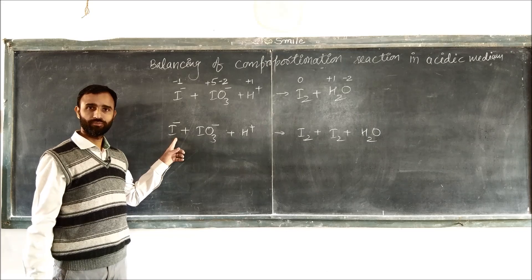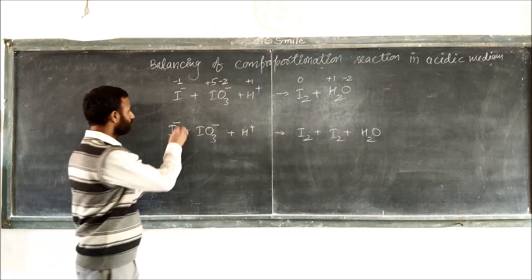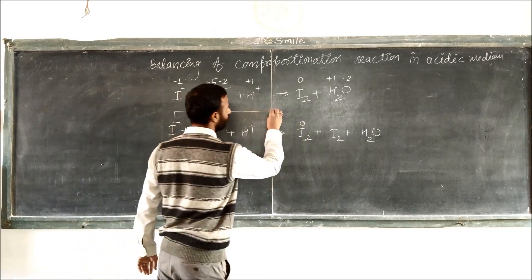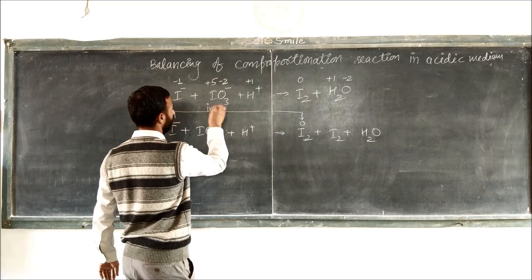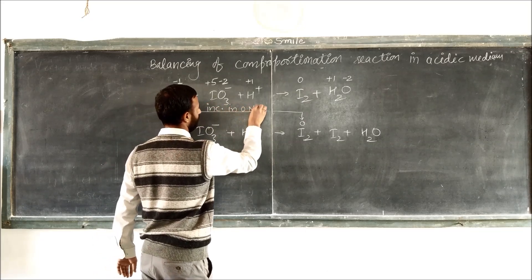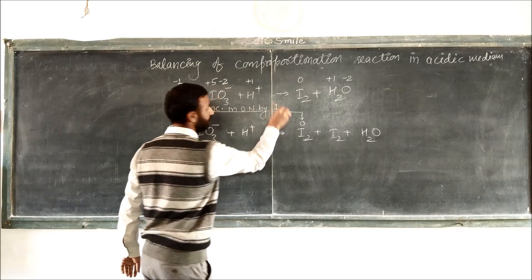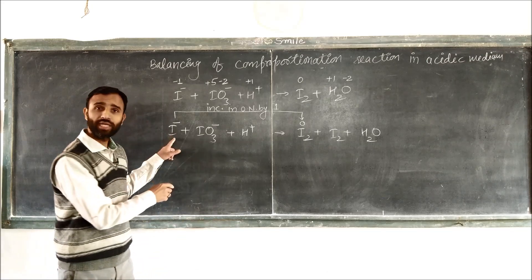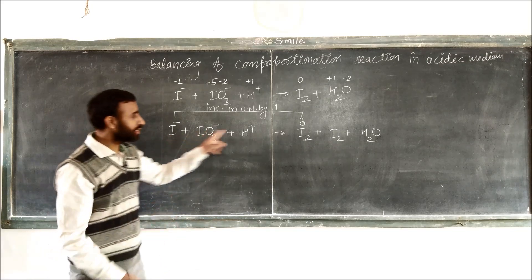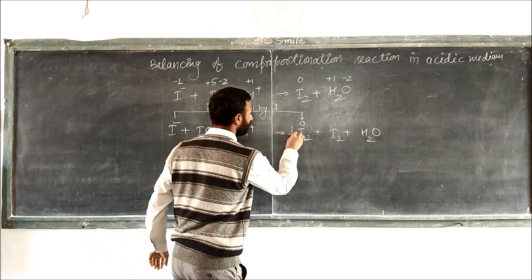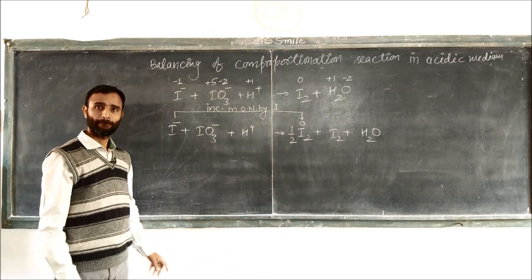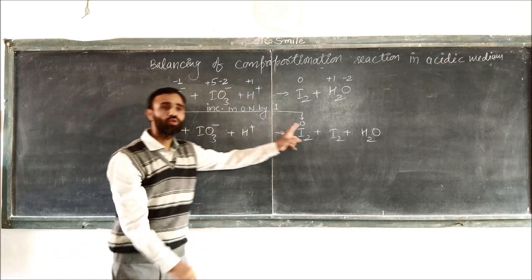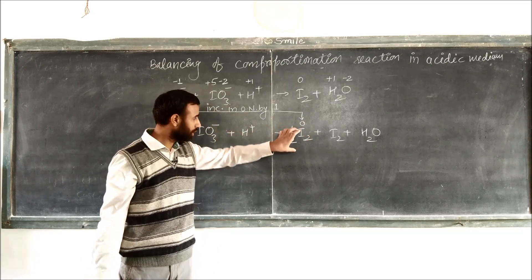I will get minus 1. Here I do this: zero. Minus 1 to zero per iodine — I₂. Increase in oxidation number by one. But here it is one iodine on one side and two on the other. So we write it as half. To balance iodine, minus 1 to 0 per iodine, so it becomes one-half.